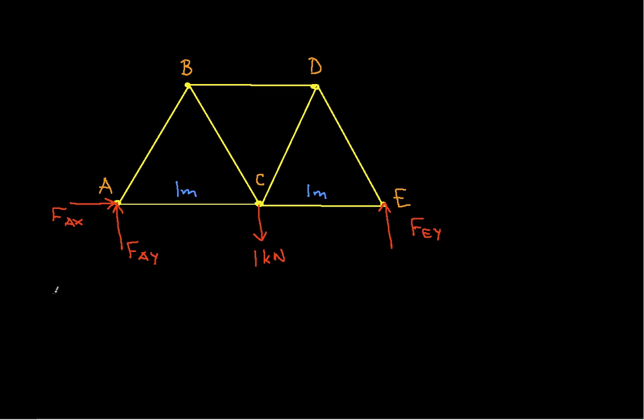Let's look at the entire truss first to find these reaction forces. If we look in the X direction, the only force in the X direction is F_A,X, and that's equal to zero. So there's basically nothing pushing the truss either to the right or the left.